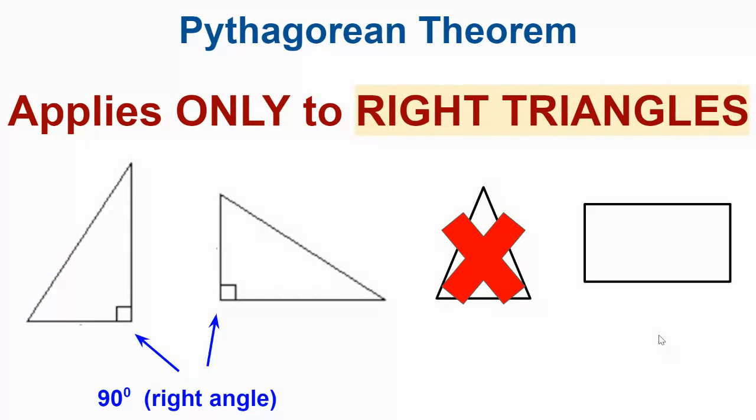And take a look at our friend, the rectangle. We know our rectangle has all 90 degree angles. However, it's not a triangle. So try again on that one. So that's the basics there.